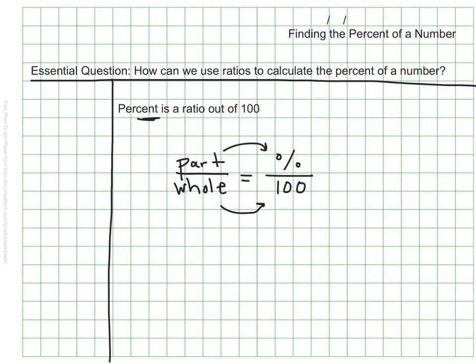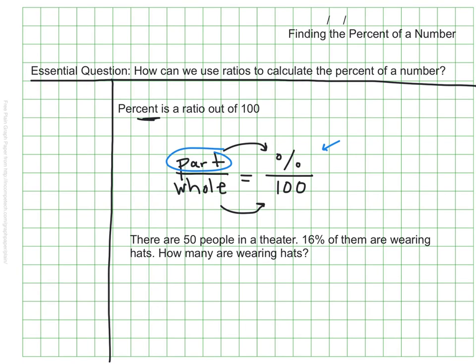However, in the past we've been looking to find the percent, but now we're going to look at what happens if we know the percent and what we don't know is the part. If the part is missing and that's what we're trying to calculate. For example, there are 50 people in a theater and 16 percent of them are wearing hats.